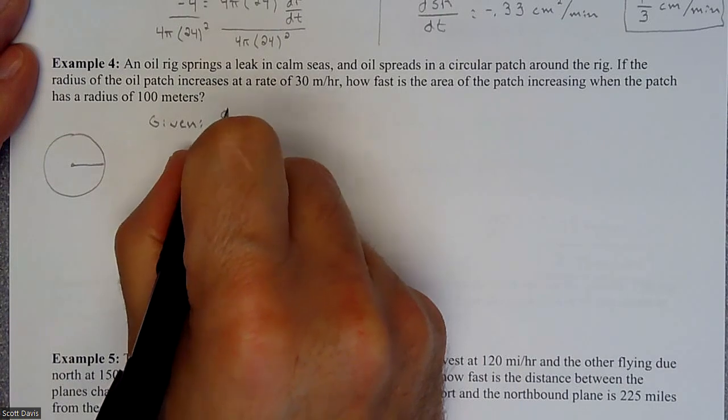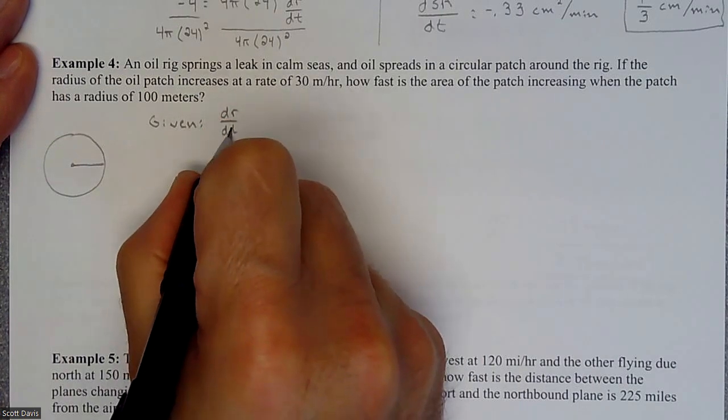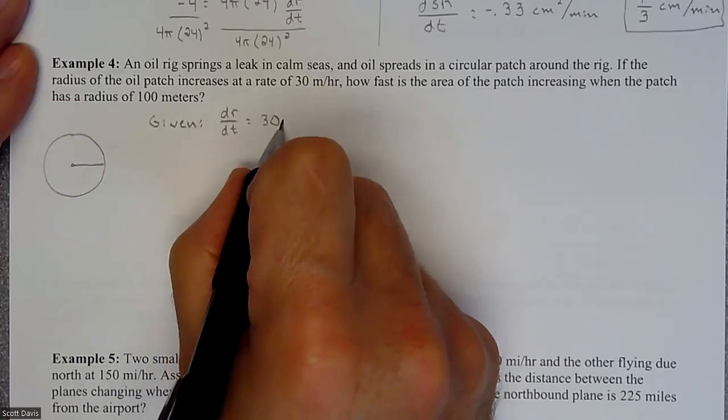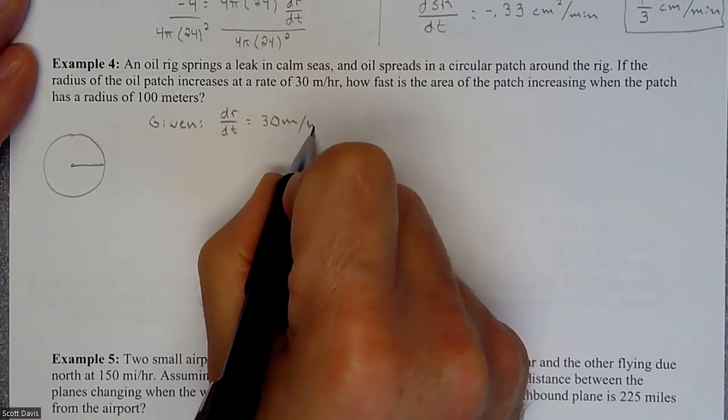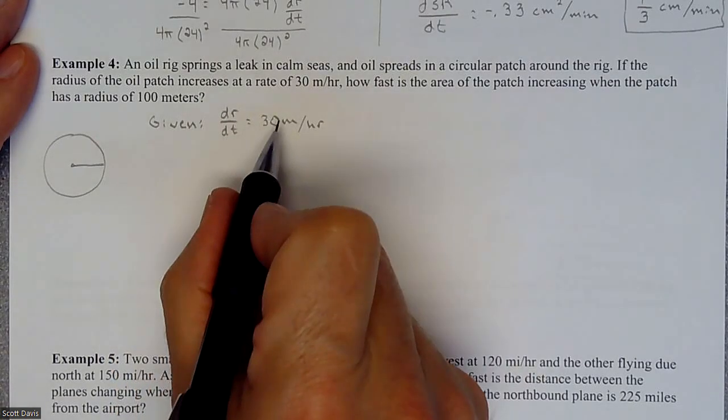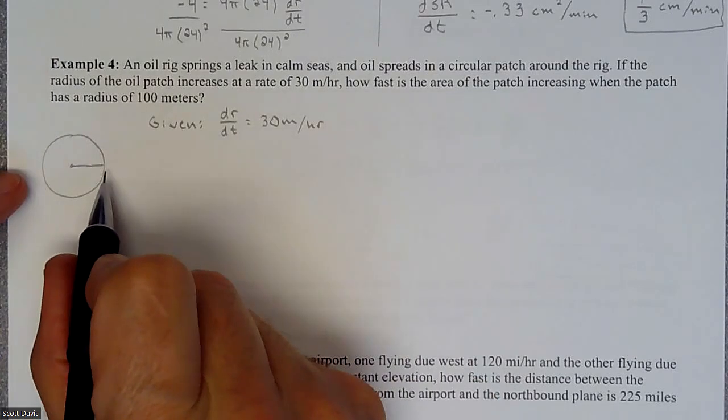So that is the rate at which the radius is expanding, 30 meters per hour. The radius is changing with respect to time, so it's actually increasing.